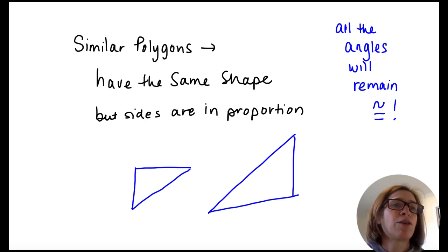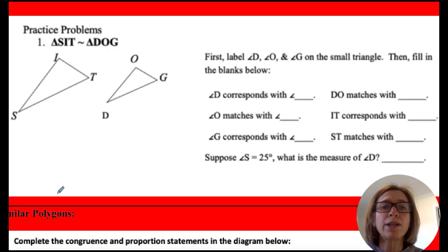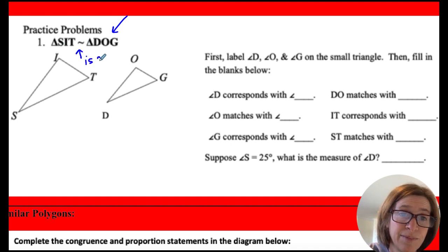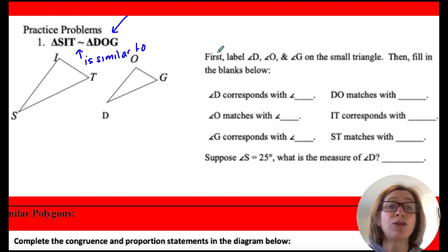So how do we figure all of this out? Well, first of all, we have to be able to correspond based on what we call a similarity statement. So this is a similarity statement. Triangle SIT is similar to triangle DOG. That statement, not the diagrams themselves, that statement tells me what corresponds. So for example, angle D is going to correspond to angle S. So same location in the statement.